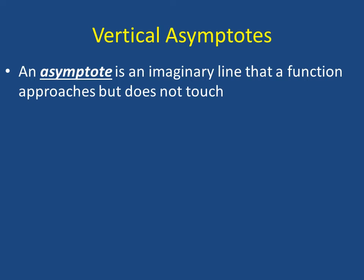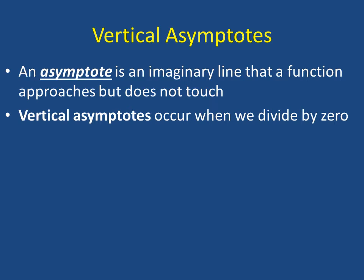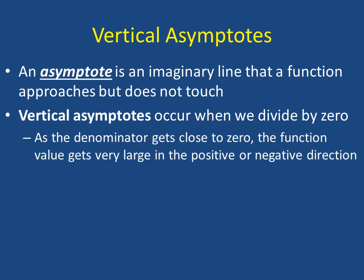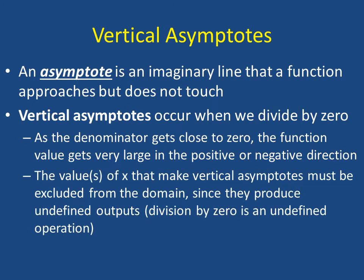An asymptote is an imaginary line that a function approaches but does not touch. Vertical asymptotes occur when we divide by 0. As the denominator gets close to 0, the function value gets very large in the positive or negative direction. The values of X that make vertical asymptotes must be excluded from the domain since they produce undefined output. Remember that division by 0 is an undefined operation. The function will approach the vertical asymptote, but we'll never touch it.